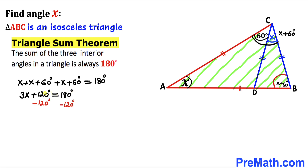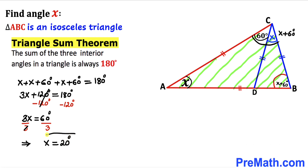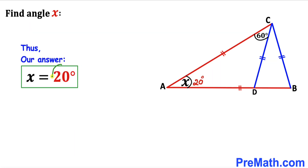Let's subtract 120 degrees from both sides, giving us 3X equals 60 degrees. Dividing both sides by 3, our angle X turns out to be 20 degrees.